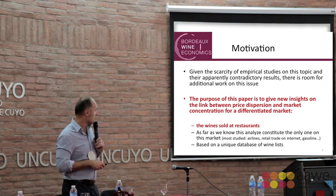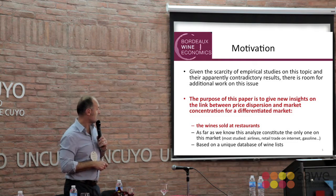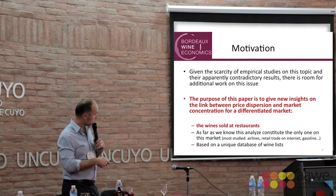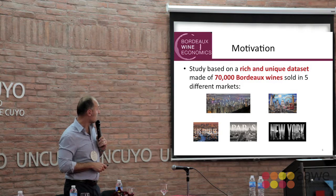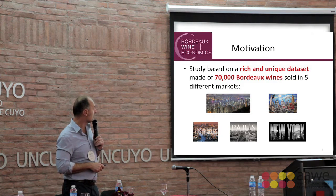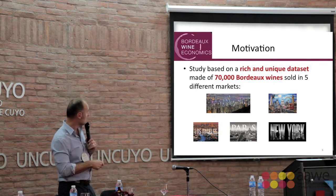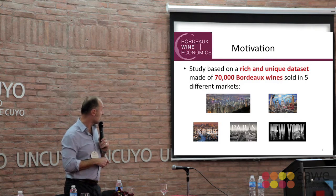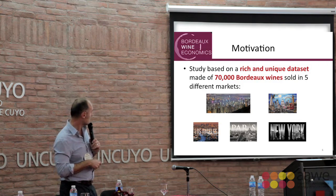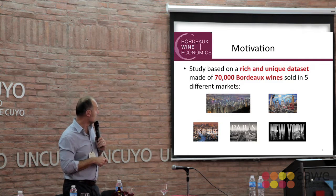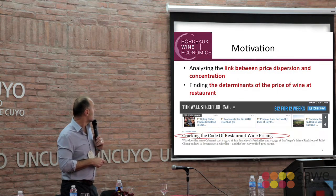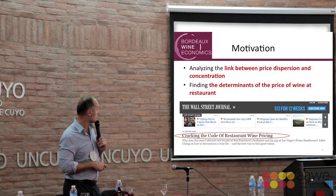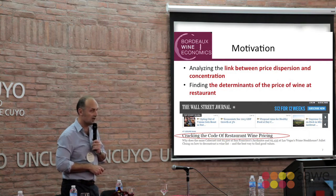We have a unique dataset of wine lists because we studied 70,000 Bordeaux wines sold in five different markets, as you can see: Los Angeles, London, Hong Kong, Paris, and New York. This unique dataset gives us the possibility to analyze the link between price dispersion and concentration.